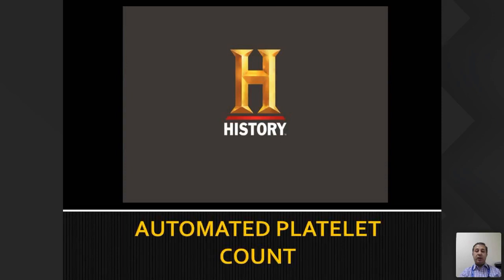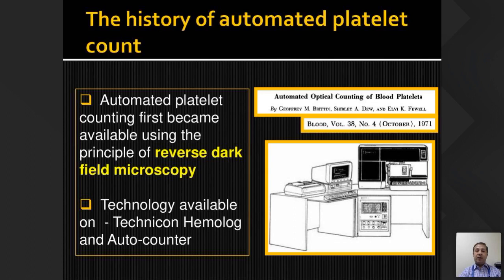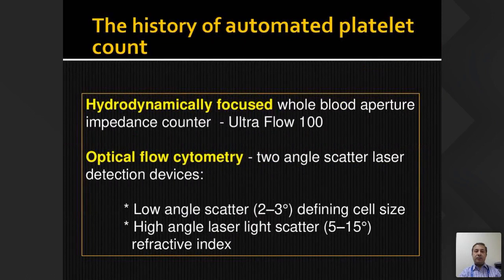The first automated platelet counting became available as reverse dark-field microscopy many years back, using technologies like Technicon, Hematology, and Automate cell counting analyzers. As hydrodynamically focused systems came up, whole blood impedance counting became more prevalent and platelet counting became more reliable, using triplicate counting and fitting curves. Eventually lasers came into picture in automated hematology analyzers, enabling optical flow cytometry-based cell counting using two-angle light scatter devices — low angle and high angle scatter — looking at refractive index of cell size.